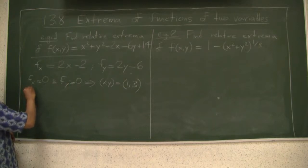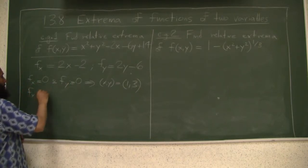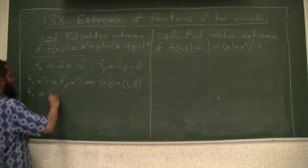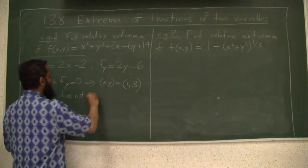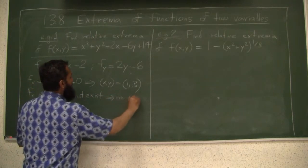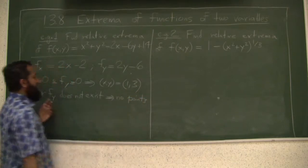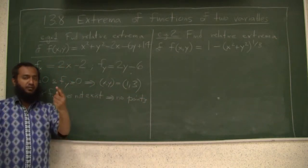If fx or fy does not exist, there is no such point. No point satisfying this criteria, so there is 1, 3. So in totality we only have the point 1, 3.